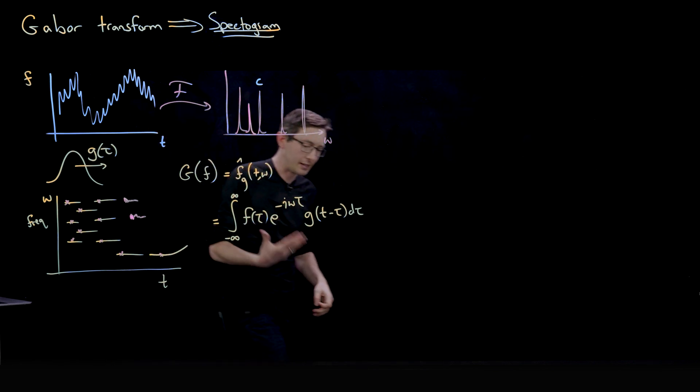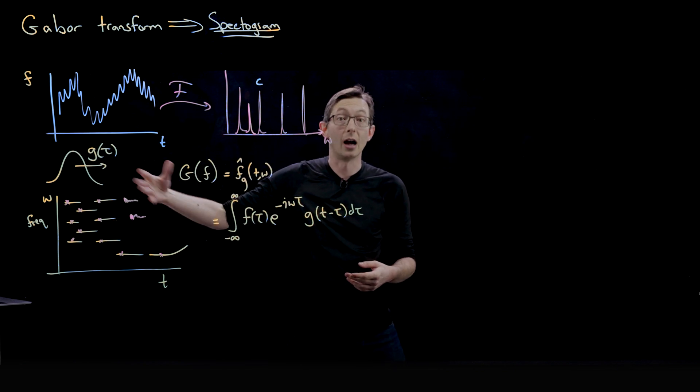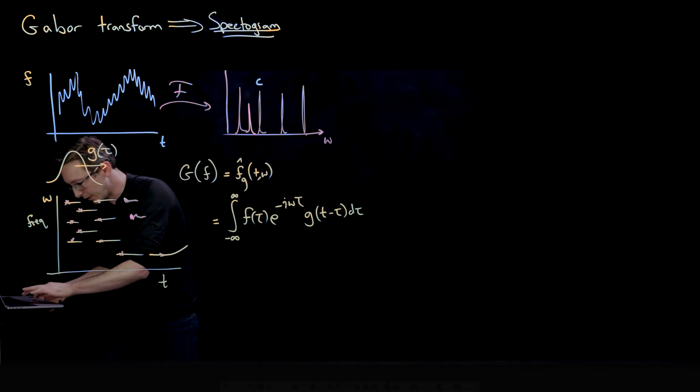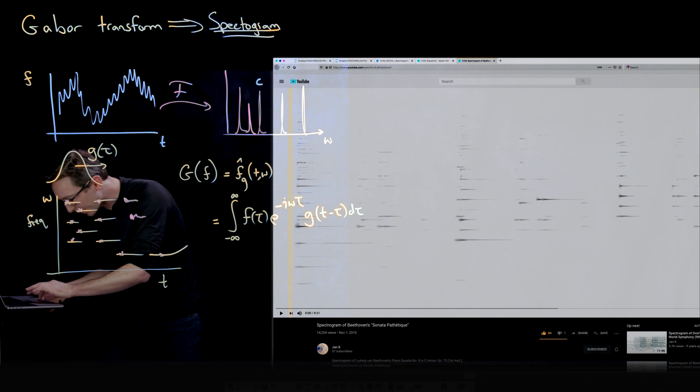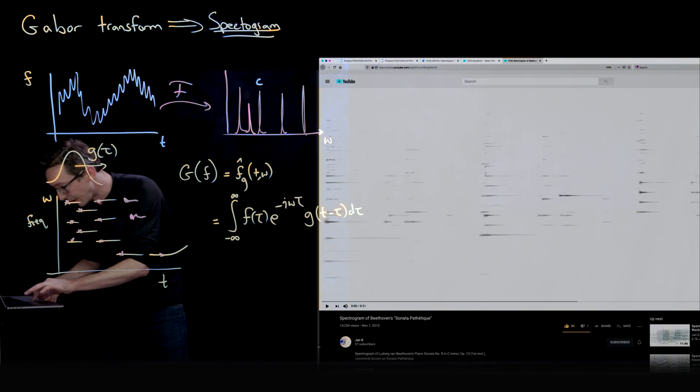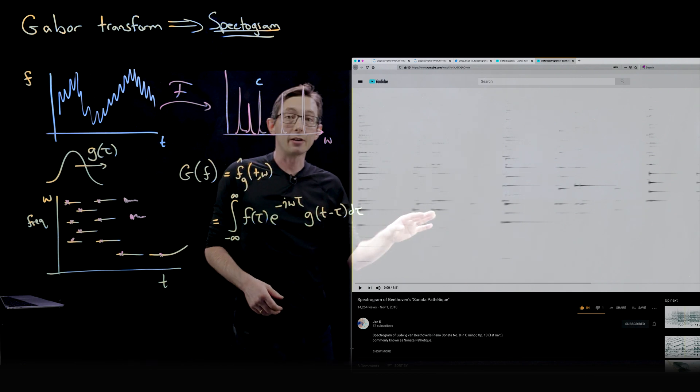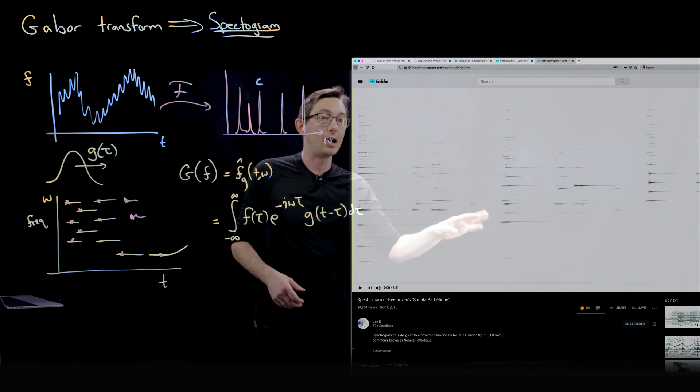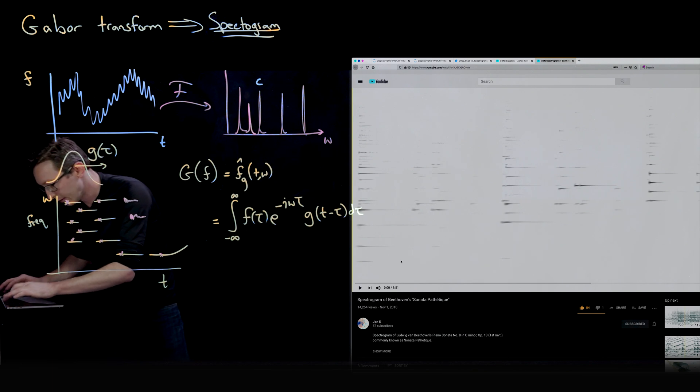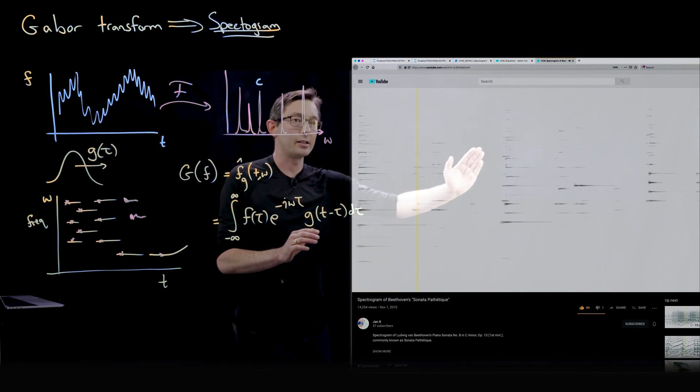And so I'm going to show you how to code this up soon. We're going to look at some examples of how to do a chirp, how to do the spectrogram of an audio signal. But I'm going to pull up one of my favorite videos. This is actually a YouTube video from Jan K. So I hope it's okay to show this. I think this is a great video that they made. It's one of my favorites. This is a spectrogram of Beethoven's Sonata. And you can just see it playing here. I'm going to hit play. I'm going to turn my volume up.